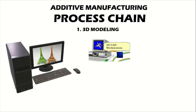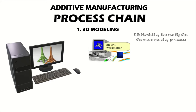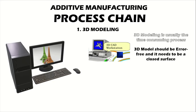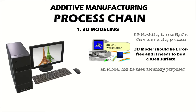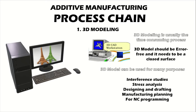The first step is 3D modeling. 3D CAD modeling is a general prerequisite and is usually the most time-consuming part of the entire process chain. 3D modeling should be error-free and needs to be a closed surface. It is most important that such 3D geometrical models can be shared by the entire design team for many different purposes, such as interference studies and stress analysis.